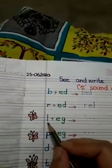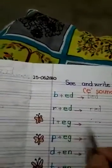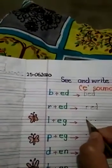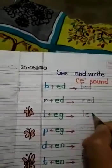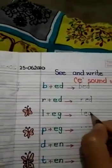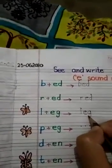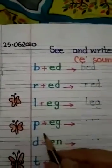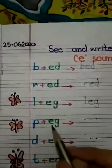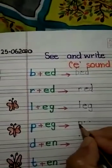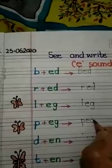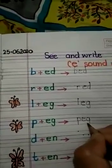Next is L, E, G — leg. Write here L, E, G — leg. After that P, E, G — peg. Write here P, E, G — peg.